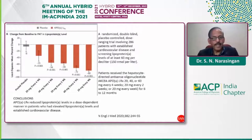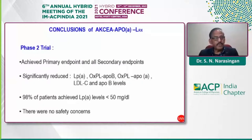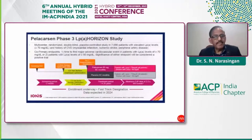Regarding antisense drugs targeting RNA: patients received a hepatocyte-directed antisense oligonucleotide, AKCEA-APO(a)-LRX, at different doses — 20 mg every week — showing nearly 80% reduction in Lp(a) in a randomized double-blind placebo-controlled trial. A Phase 2 trial showed significant reductions in primary and secondary endpoints including Lp(a), oxidized phospholipids, Apo(a), LDL-C, and Apo B levels. Nearly 98% of patients achieved levels less than 50 mg with no safety concerns. We await the Phase 3 publication.